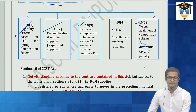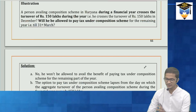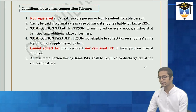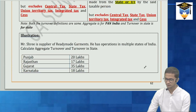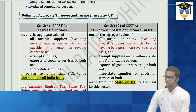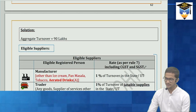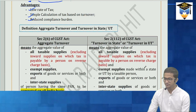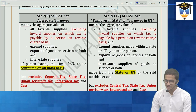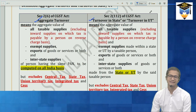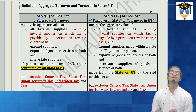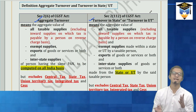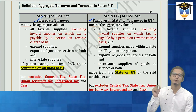Now let's first complete the aggregate turnover definition and then come to each subsection. There are two definitions of turnover in GST: aggregate turnover and turnover in state or union territory. Both definitions are almost the same except for one point which we'll discuss. Aggregate turnover means — it is an exhaustive definition — the aggregate value of all taxable supplies, excluding inward supplies on which tax is payable by a person on reverse charge basis.